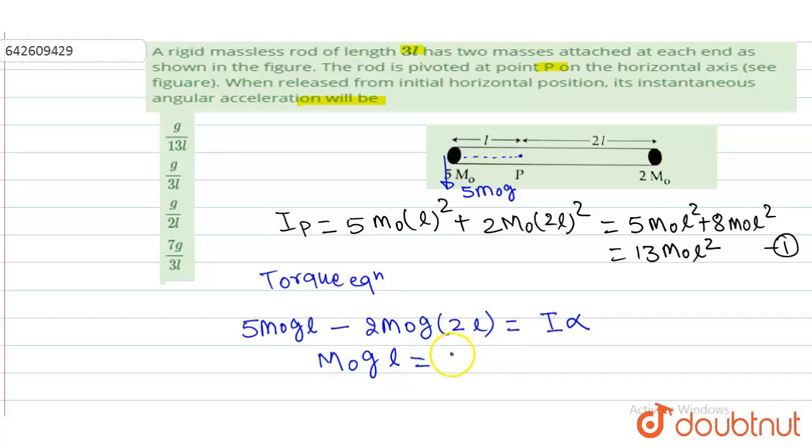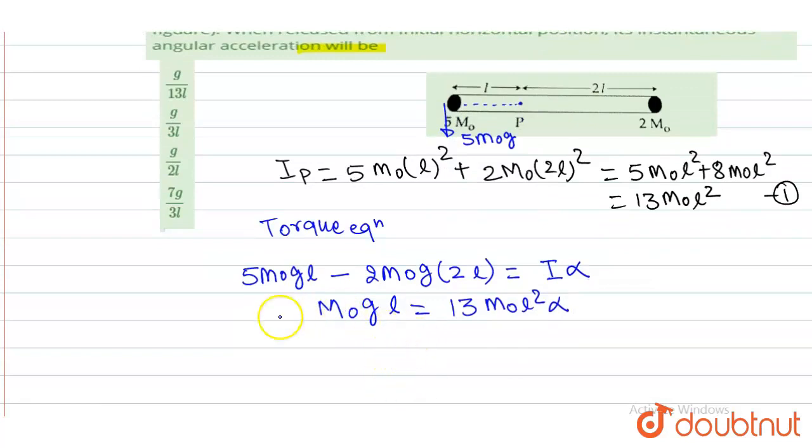Is equal to I. I is 13M₀L² into α. Now, we have to find the value of α. From here, we can say M₀ cancels out, L cancels out.